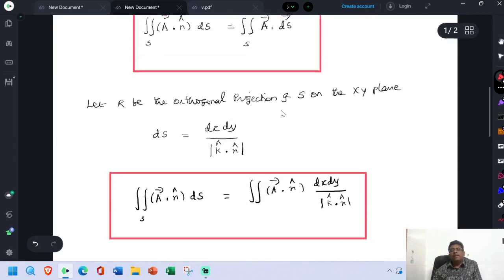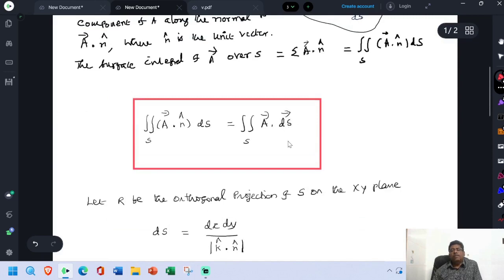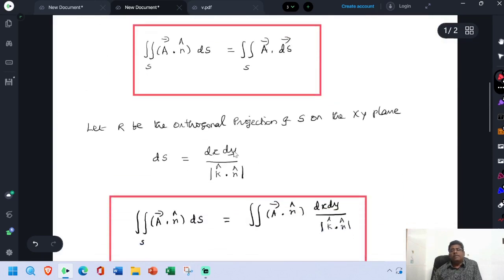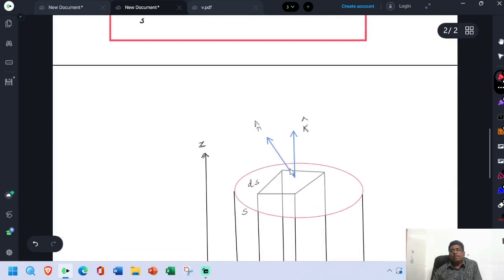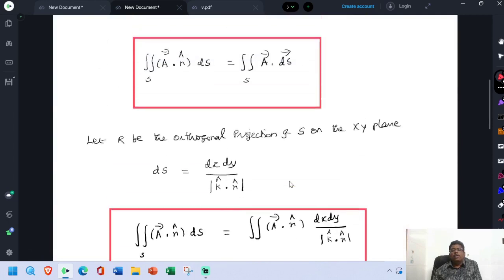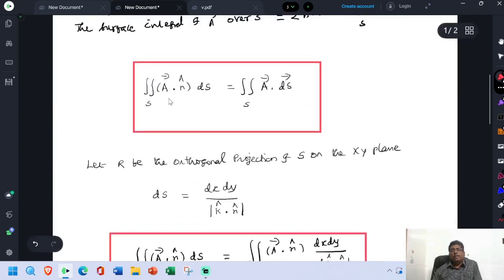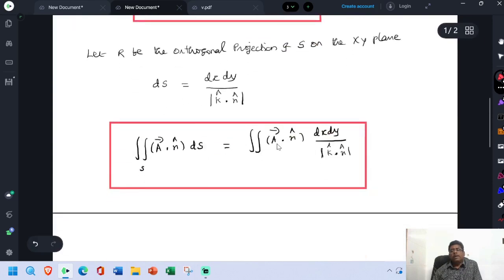Now the ds value. This ds should be replaced by dx into dy divided by modulus of k cap dot n cap. This is k cap, this is n cap. Now this relation vector A dot n cap into ds is given by integral of vector A dot n cap into dx dy divided by modulus of k cap dot n cap.